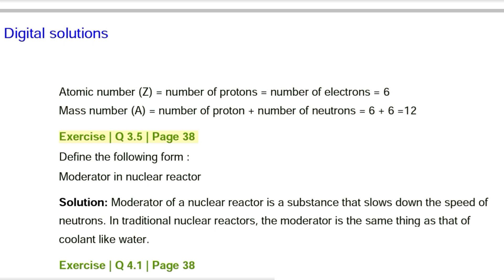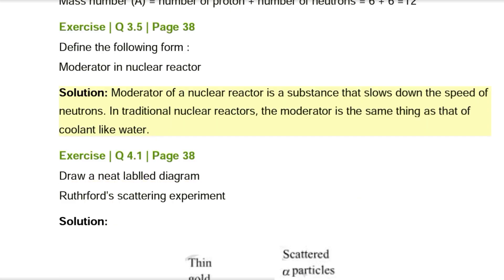Exercise Q3.5, page 38. Define: Moderator in a nuclear reactor. Solution: A moderator of a nuclear reactor is a substance that slows down the speed of neutrons. In traditional nuclear reactors, the moderator is the same thing as the coolant, like water.